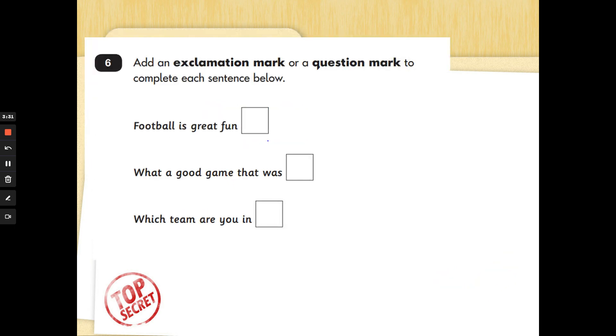Number six. Add an exclamation mark or a question mark to complete each sentence below. Remember, an exclamation mark shows you how the person has read it, how they've expressed themselves. And a question mark is used to ask you a question and an answer might pop into your head. Football is great fun. Football is great fun. Is there an answer to that sentence? No. It's an exclamation sentence, isn't it? Well spotted. What a good game that was. Do you think that one needs pause the video and tell somebody at home whether you think that's an exclamation sentence or a question sentence? That's right. It's an exclamation sentence because it was not asking us anything.